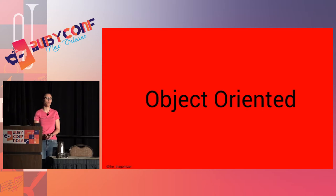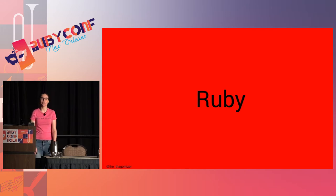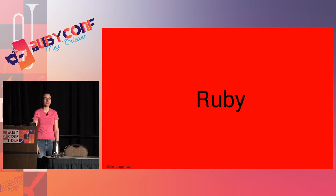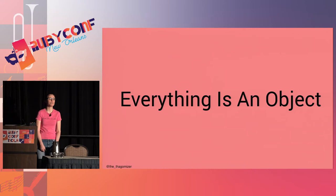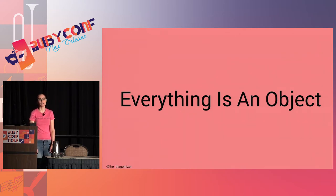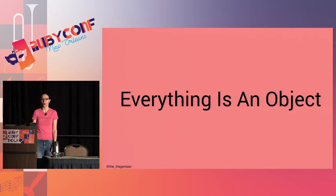We're going to start with OO. We're at RubyConf, so we're going to use Ruby — color-coded red on my slides. Everything in Ruby is an object. Everything. False is an object, false is a singleton, an instance of an object. Null is an object. Your classes themselves are instances of the object class. Not all OO languages are this pure, but the general idea in OO is that most things — ideally all things — are objects.